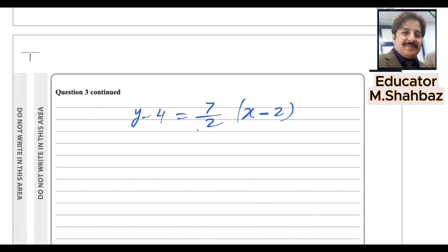So best thing, you multiply, get rid of this denominator easiest way. And multiply this inside. This 2 will multiply with both values. It gives you 2y minus 8 and 7 multiply x will be 7x and 7 multiply 2 is minus 14.